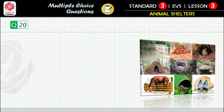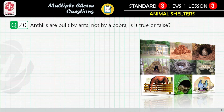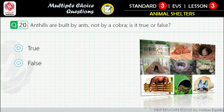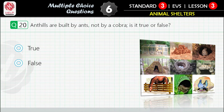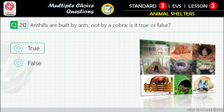Question 20: Ant hills are built by ants, not by cobras — is it true or false? First option: true. Second option: false. Correct answer is: true.